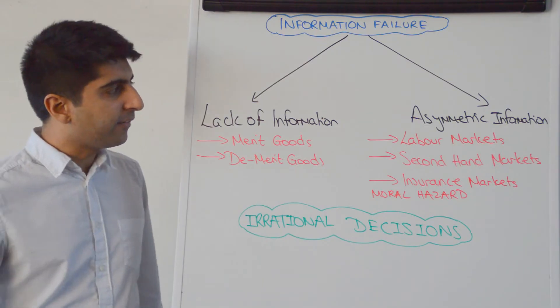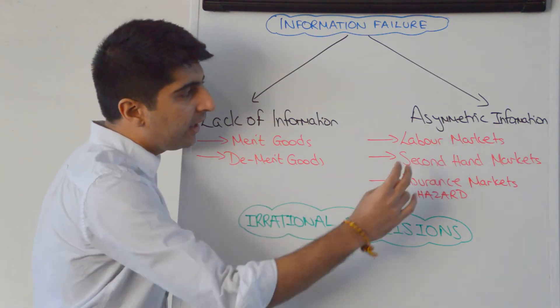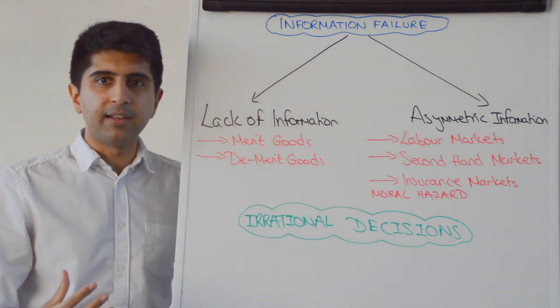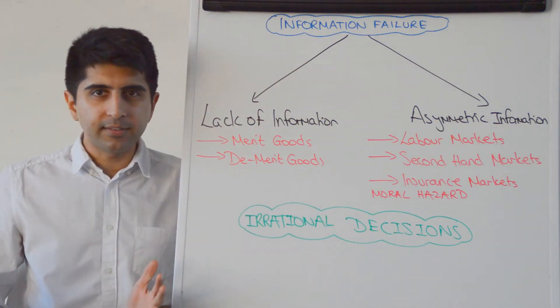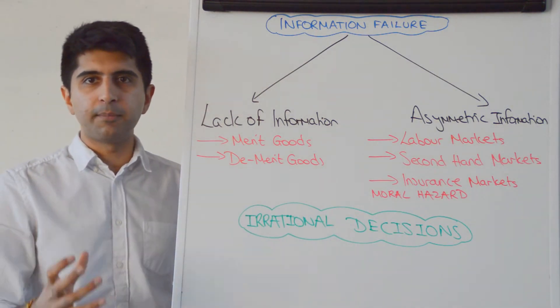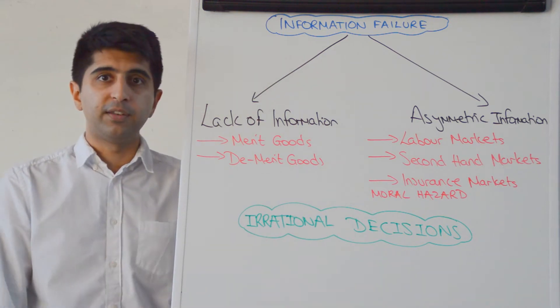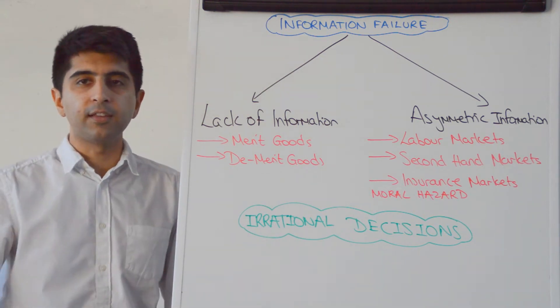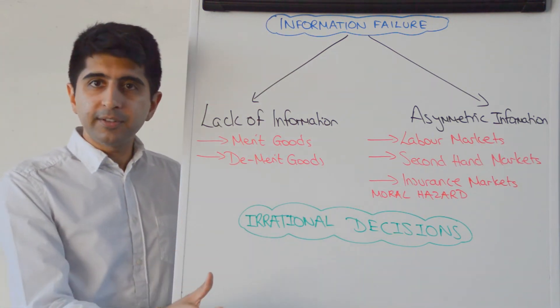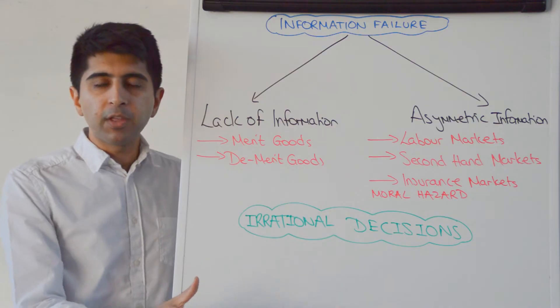Let's look at some real life examples. In labour markets, we have a classic example of asymmetric information — of imperfect information in this case — between the employer and the potential worker.